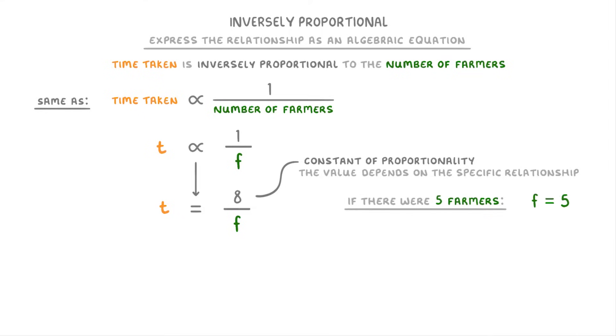Whereas if there were 5 farmers, then we'd do t equals 8 over 5, to find that it would only take 1.6 hours. So because we had more farmers in this second case, it took less time to pick the apples.